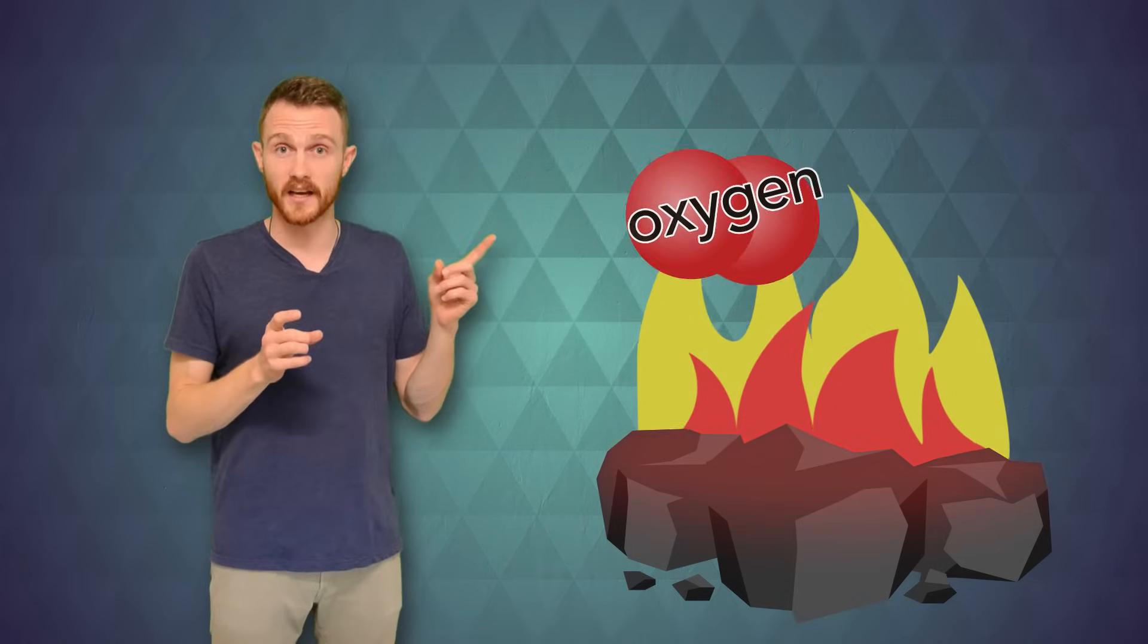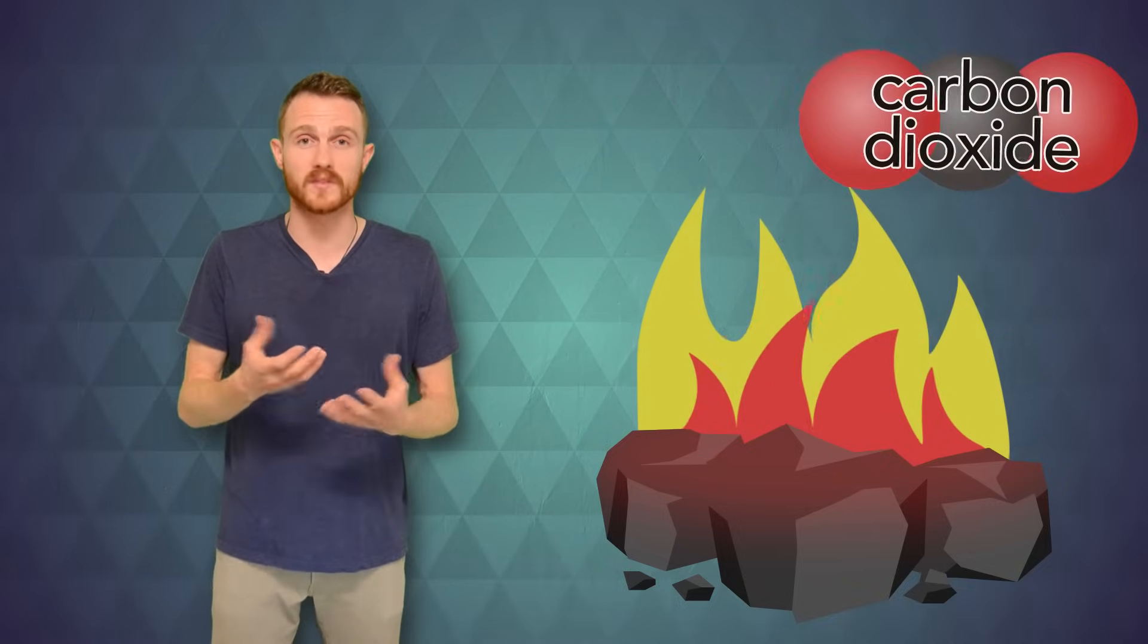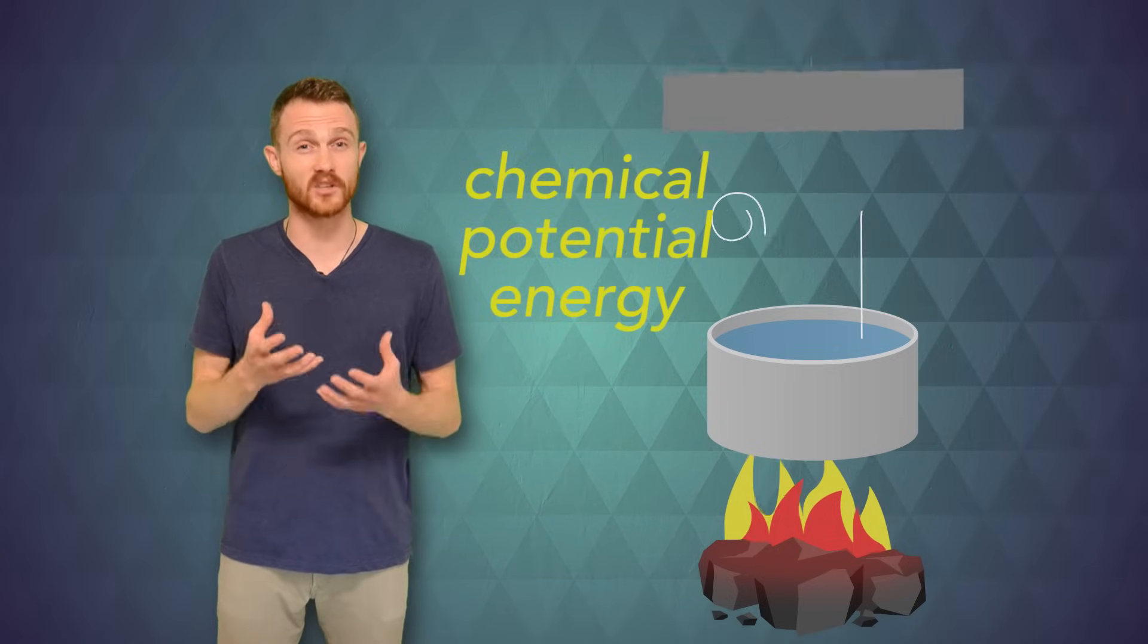But what if that energy came from coal? Well, when you burn coal, there's a chemical reaction between oxygen in the air and the coal that creates carbon dioxide and other chemicals. The creation of these chemicals releases energy as heat, which we use to boil some water, which spins a turbine like the wind turbine. Because all this energy is coming from a chemical reaction, we say that the coal has chemical potential energy.